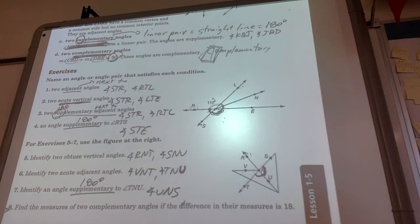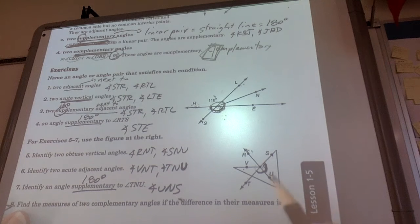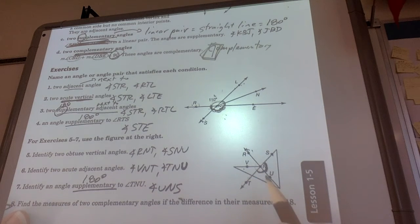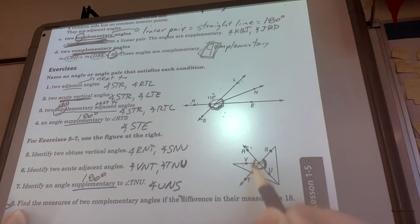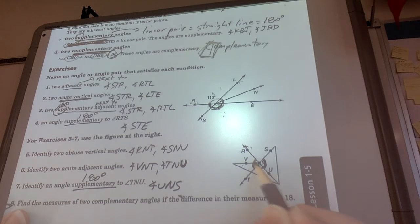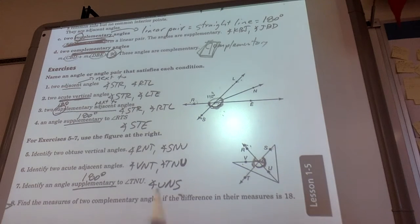Two obtuse vertical angles. A little bit tricky picture here, but check this one out. RNT is that right there. And a vertical angle, they're kind of sharing the vertex across from each other, would be SNU. And you can kind of see that right there.